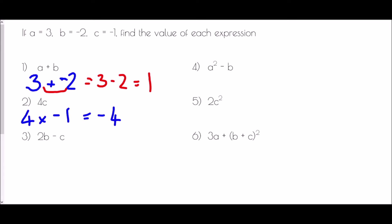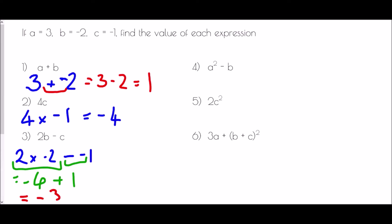In part 3, we have 2b, which means 2 multiplied by negative 2, then subtract whatever c is. C is negative 1. BIDMAS tells us to handle the multiplication first: 2 times negative 2 is negative 4. Then subtracting a negative means adding, so we have negative 4 plus 1. Starting at negative 4 and adding one gives negative 3.